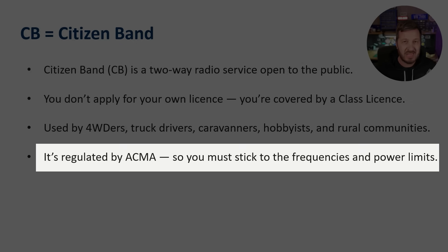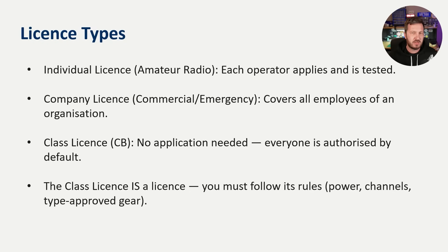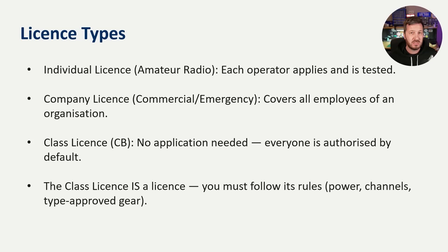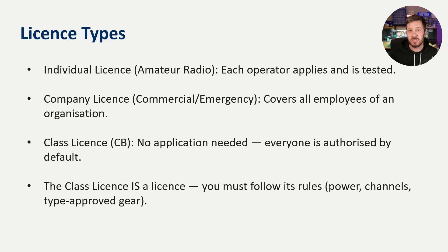It's regulated by the Australian Communications and Media Authority, and there are frequencies and power limits to adhere to. All around Australia there are different radio communication services that require licensing. Amateur radio requires each operator to be tested, do an exam, and apply for a license. In a company license — for commercial businesses or emergency services — the license covers all employees or volunteers. With the CB radio class license, that license is the license. It has rules that must be followed, but you don't need to individually apply — just buy the equipment and operate as long as you follow the rules.